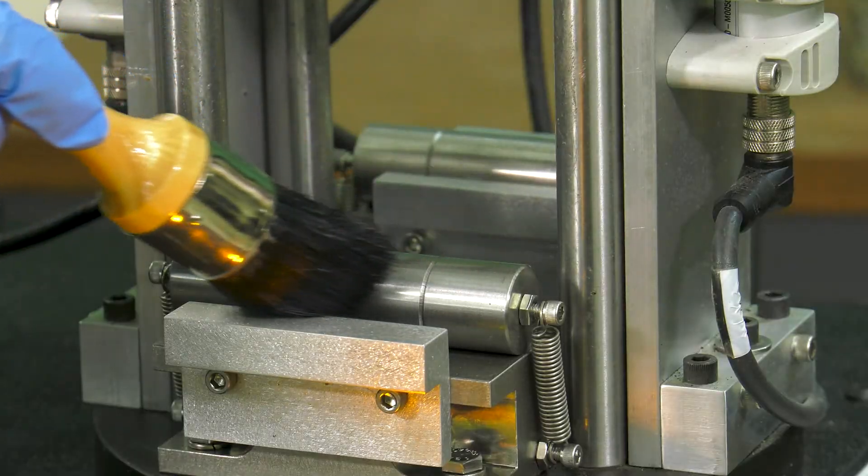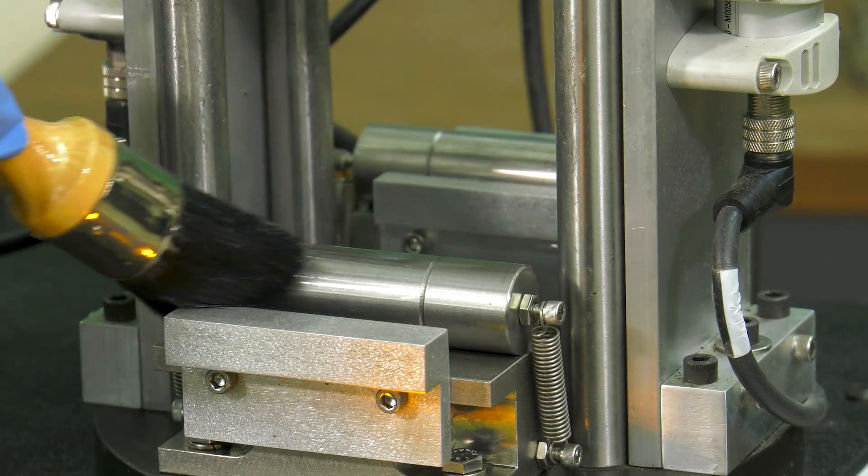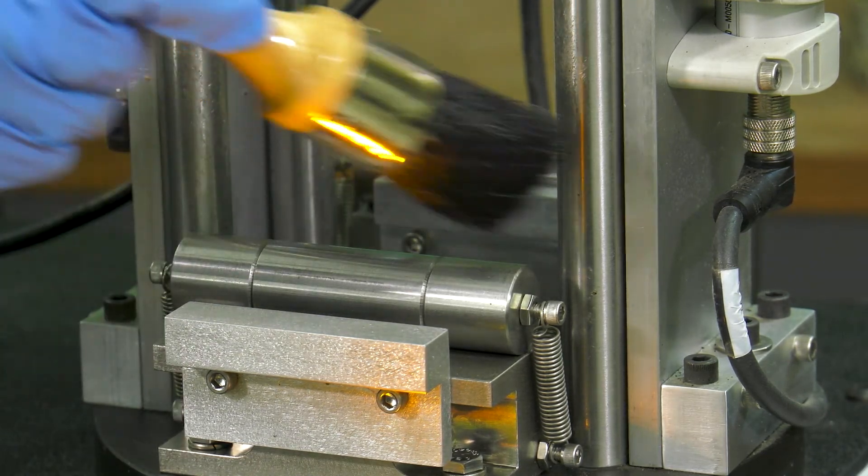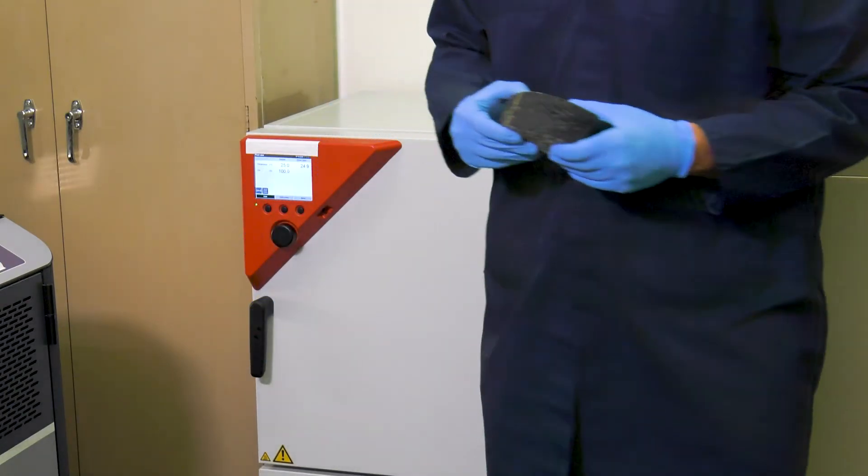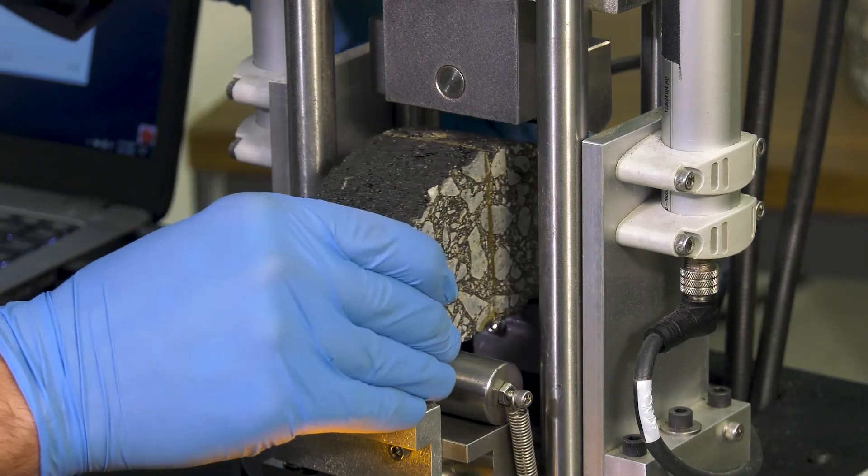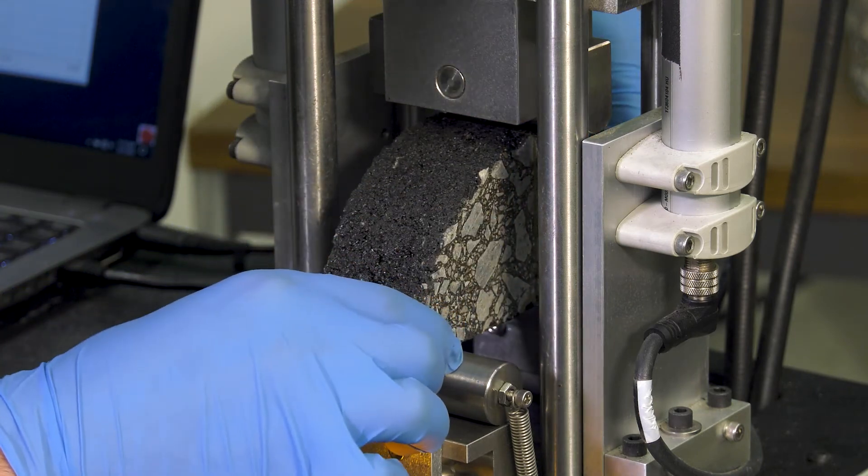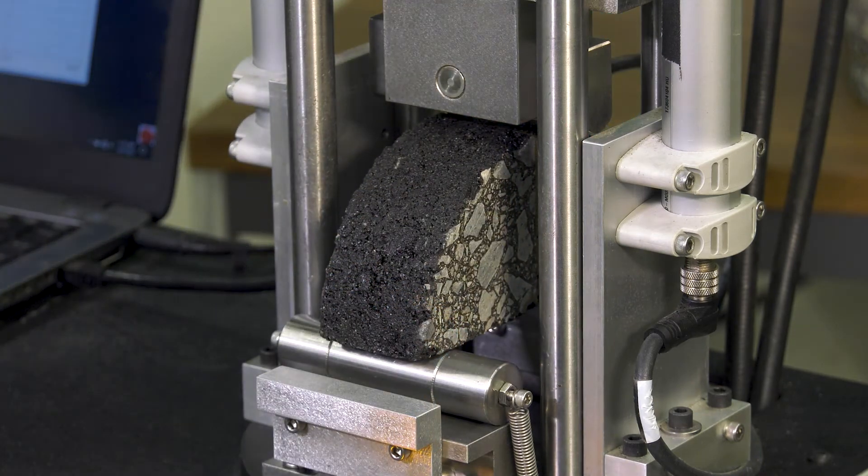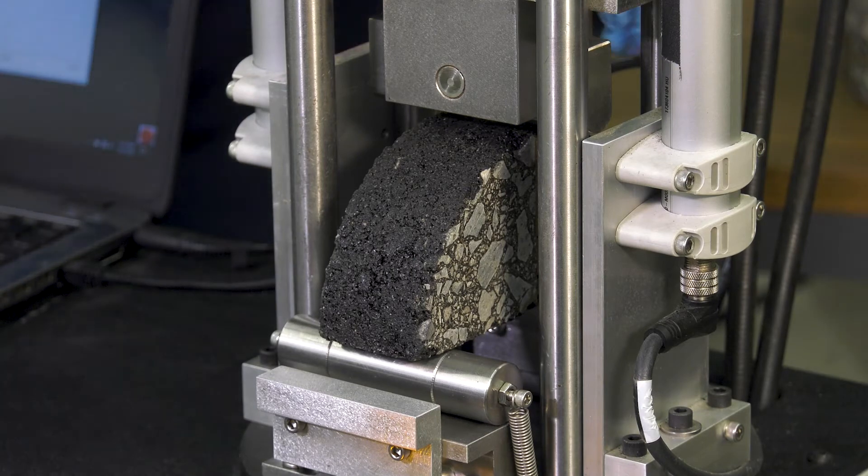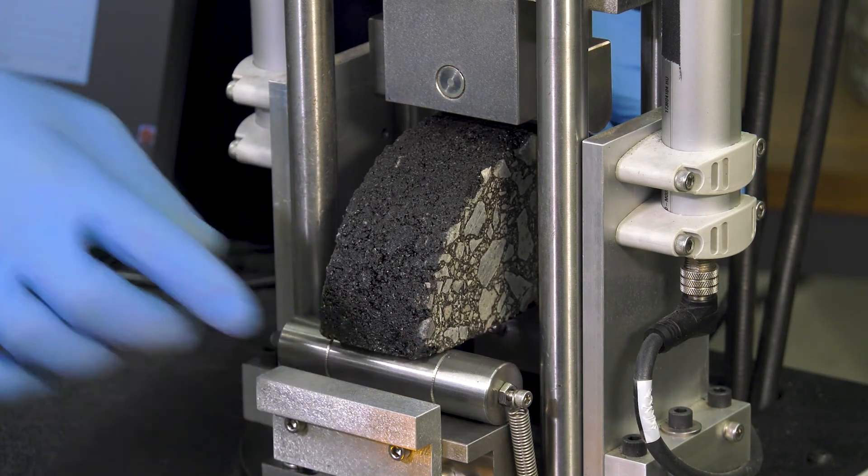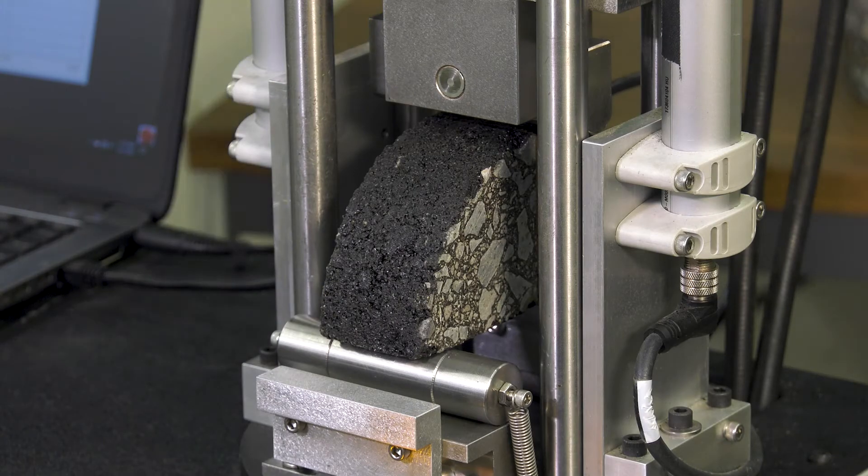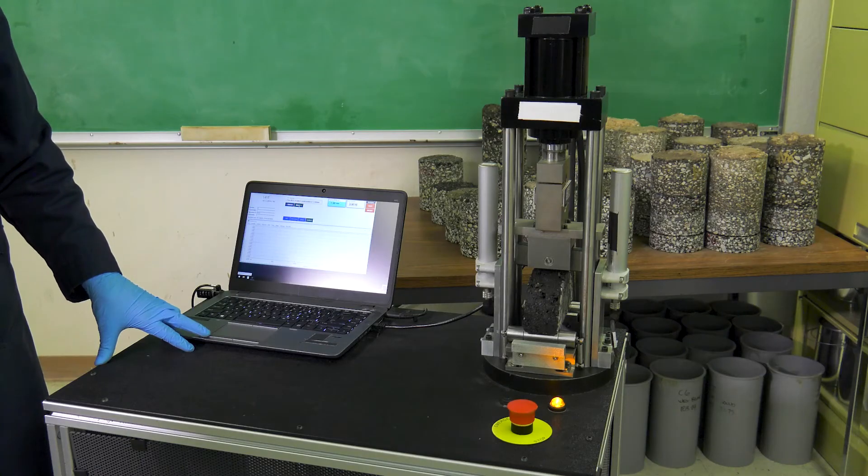Before beginning the test, inspect the fixture to ensure all contact surfaces are clean and free of debris. Remove the specimen from the external conditioning chamber and quickly mount it in the testing equipment. Ensure it is level and makes uniform contact with the steel roller support. Verify that the specimen is centered and the vertical axis of loading will pass through the middle of the notch. Now the test specimen is ready for testing.